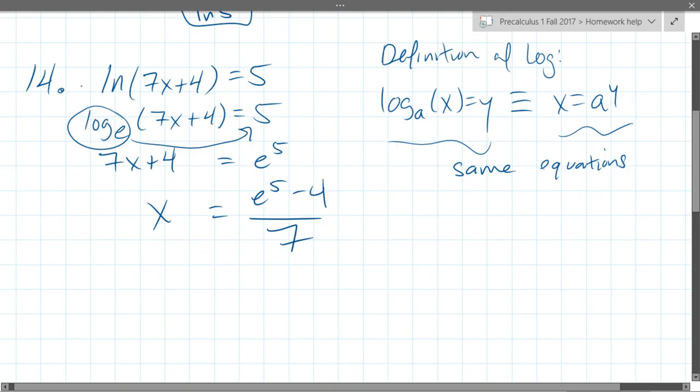So what we're going to do is use that definition. We're going to move this E to the right side as a base. So it's going to appear as E to the 5th, and on the left side it's just 7X plus 4.